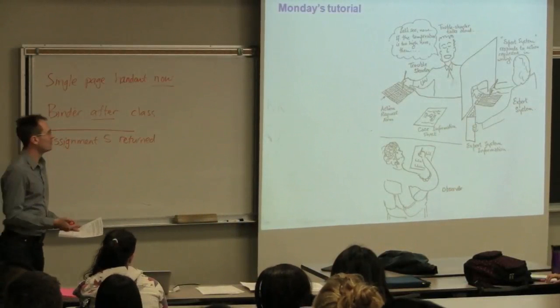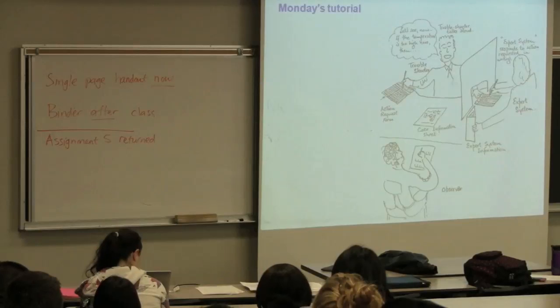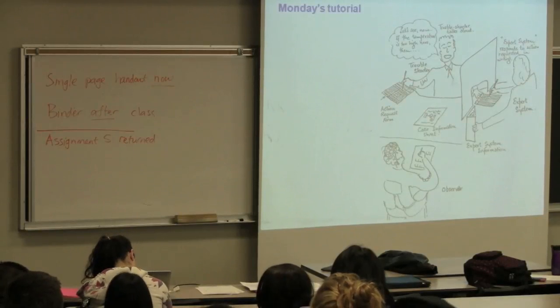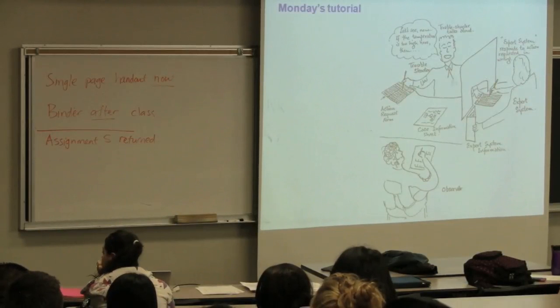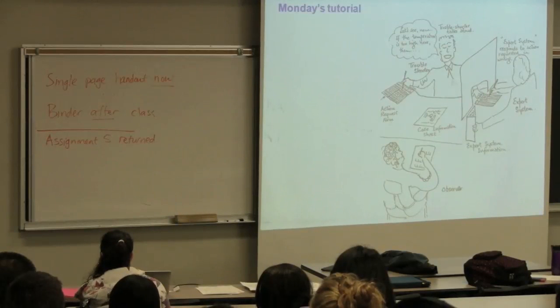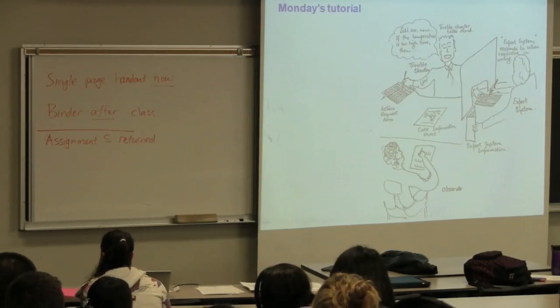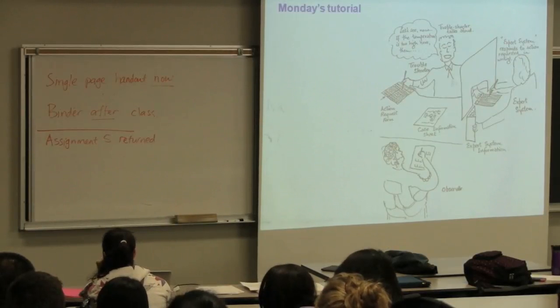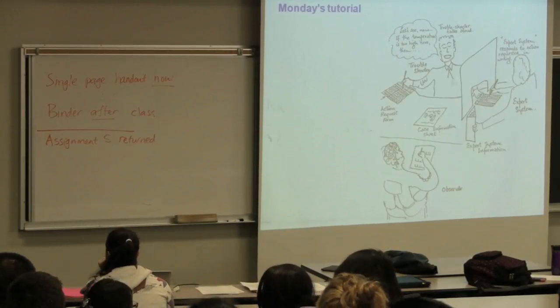They will then request information from the plant. What is the temperature on TC7 reading right now? They'll request that information, hand it to the expert system, and the expert system will respond with an answer. This is why this binder is handed out this week, for you as the expert system to read it through, so you understand exactly what the plant is doing, so that you can give correct answers to the troubleshooter. You're not leading the troubleshooter on, you're simply giving minimal information.